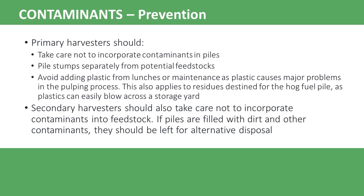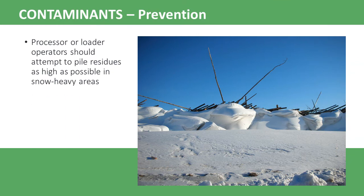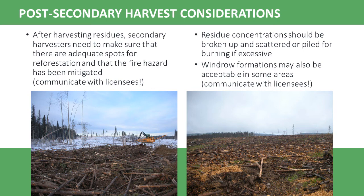Secondary harvesters may have to pull stumps from piles, clear snow, or simply pass on piles that are considered too dirty. Snow can be problematic for secondary harvesters as it tends to melt while passing through machinery. The operator should be aware that feedstock could freeze inside the truck if wet chips or hog fuel is loaded directly into the truck when the outside temperature is below freezing, which would be very difficult and costly to unload. In heavy snow areas, primary operators should attempt to make residue piles higher to allow access to residues that are free of snow. After the secondary harvester is finished, operators should make sure that there are adequate spots for reforestation and that the fire fuel level has been sufficiently reduced. If unsure, secondary harvesters should discuss with the licensee or primary harvesters to make sure these issues have been handled appropriately.